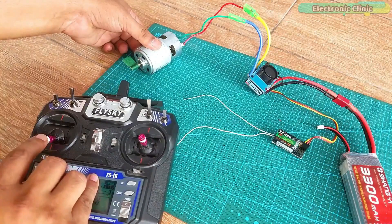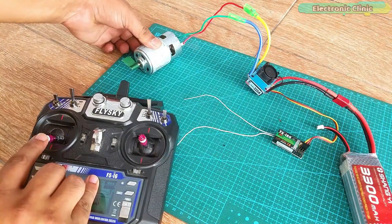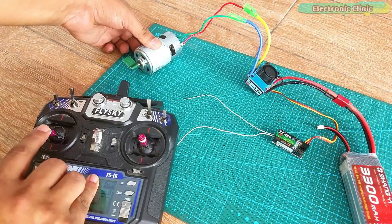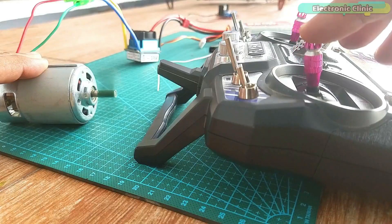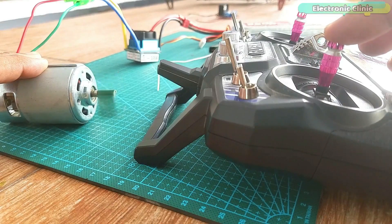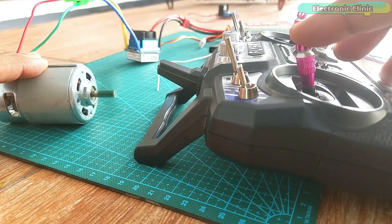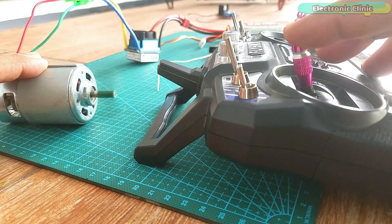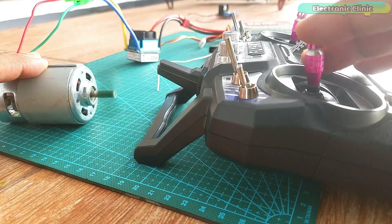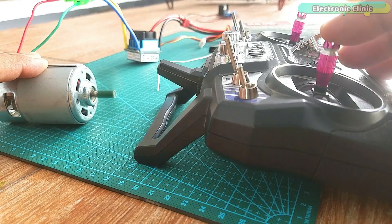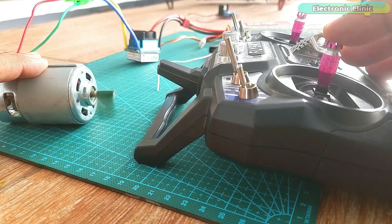First we are going to control the 775 motor in the forward direction. To increase the speed simply move the throttle stick in the forward direction and to slowly stop the motor move the stick in the downward direction. You can also apply brake if you quickly move the throttle stick in the reverse direction. When the throttle stick is in the middle position the motor simply stops.